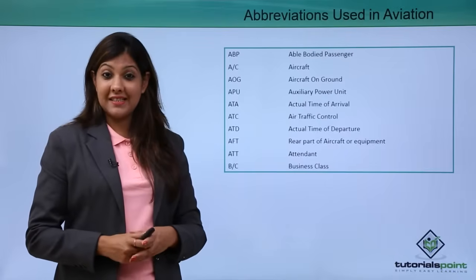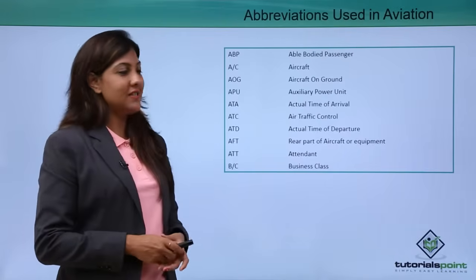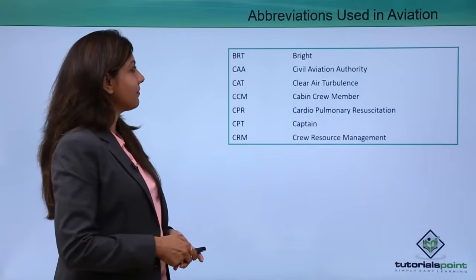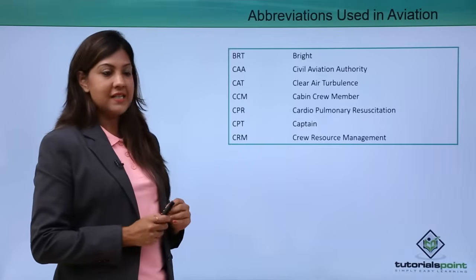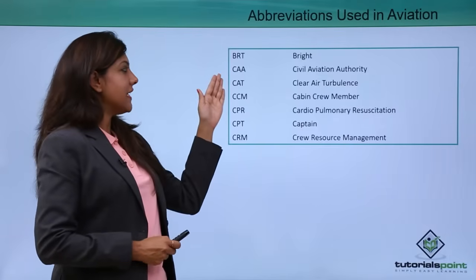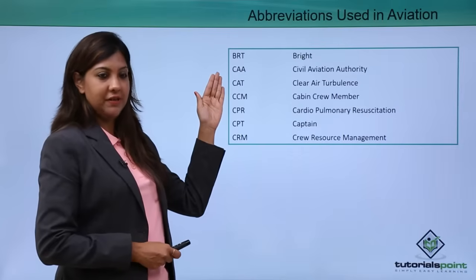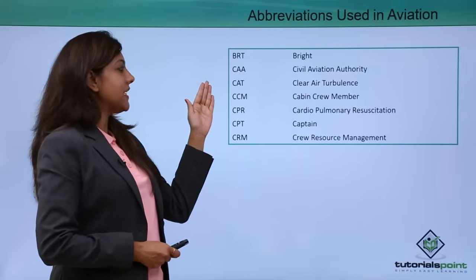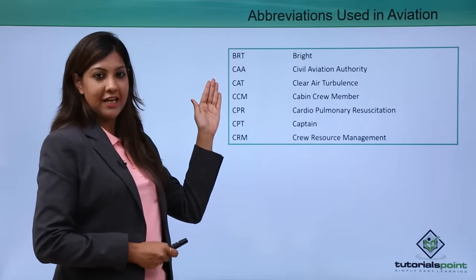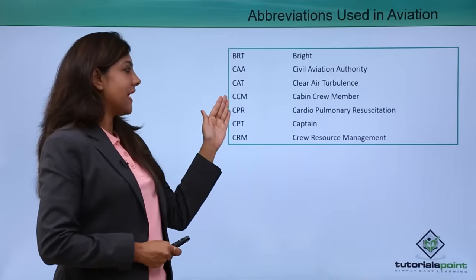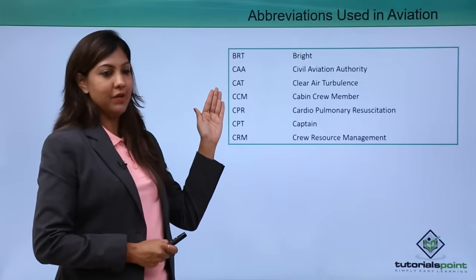BC stands for business class. Let's take a look at certain more terminologies. BRT stands for bright. CAA stands for civil aviation authority. CAT stands for clear air turbulence. CCM stands for cabin crew member.